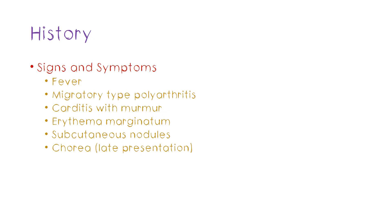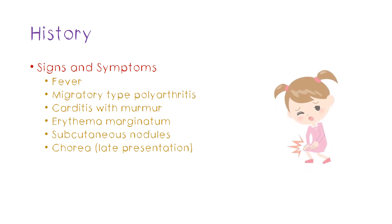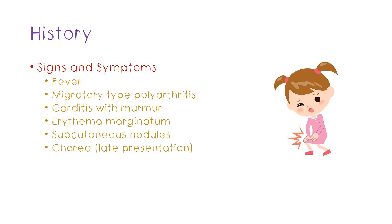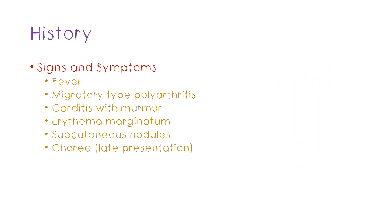There are some classic features of rheumatic fever. One of the main ones is fever. You can also see a migratory type polyarthritis, meaning inflammation of multiple joints. It starts in one large joint like the ankle, resolves completely in a few days, and then another large joint like the knee gets affected — hence the name migratory.